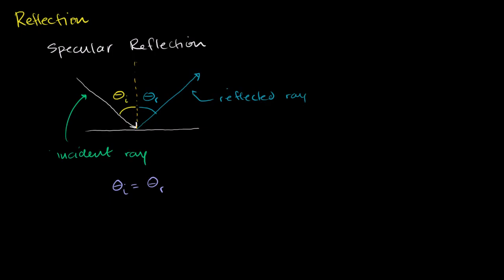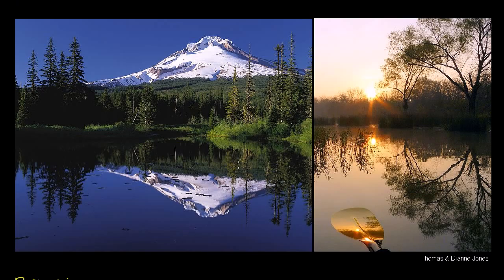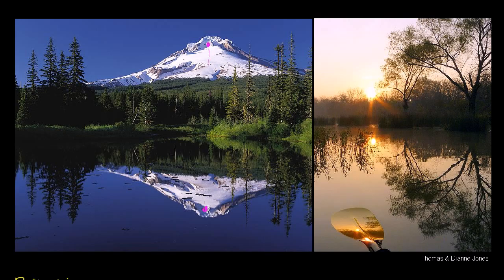We can see specular reflection in these images. You have light from the sun hitting this mountain, and that's being reflected diffusely — that's why we don't see the actual image of the sun there, just white light scattered in every direction. But some of those white light rays hit the water. For example, this part of the mountain sends light hitting this part of the water surface, which then undergoes specular reflection straight to our eyes.